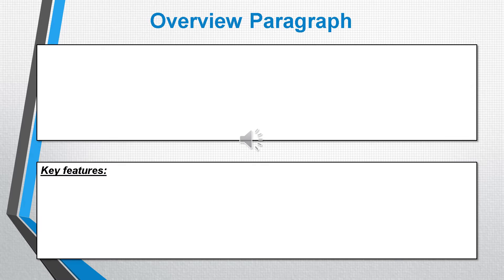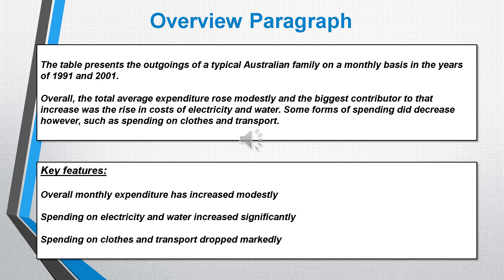Now we need to go back to our key features that we've already selected and form our overview paragraph. I've done that by starting with the word 'overall,' so the examiner is clear that this is the overview paragraph. It reads: 'Overall the total average expenditure rose modestly, and the biggest contributor to that increase was the rising costs of electricity and water. Some forms of spending did decrease, however, such as spending on clothes and transport.' Note once more that there are no numbers, facts or figures in here — we're just giving the bigger picture idea of the changes between 1991 and 2001.